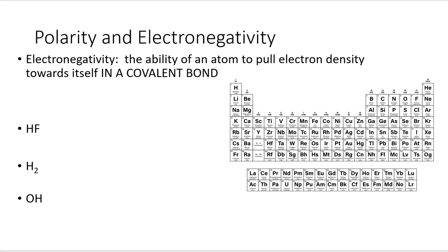In a situation in which there's no electronegativity difference, those electrons are shared equally — they spend the same amount of time around each one of the atoms. But when there's an electronegativity difference, the electrons that are shared spend more time around the atom that is more electronegative. The trend is that electronegativity increases across the periodic table to the right, and it increases going up. So fluorine is the most electronegative atom.